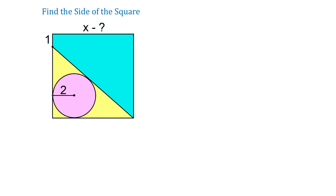Hello. In this figure we have a square, and inside this yellow right triangle we have an inscribed circle. The radius of this circle is 2 units and this line segment is 1 unit. We need to find the side of the square.